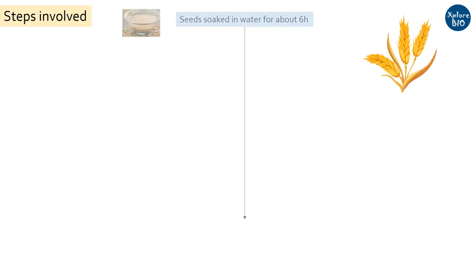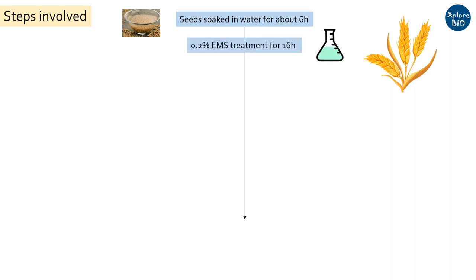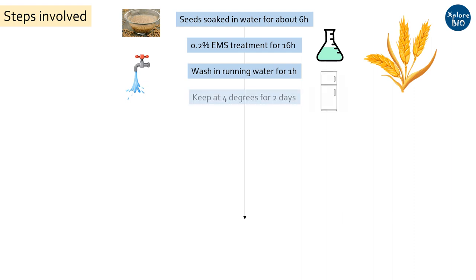First, several thousand seeds of wheat are soaked in distilled water for around 6 hours. Then the seeds are generally shaken in EMS solution of appropriate concentration for around 16 hours at 25 to 27 degrees. It should be noted that pre-soaking in water is essential before EMS treatment, as directly giving EMS treatment to dry seeds leads to severe seed lethality. Seeds are then washed thoroughly with running water for around 1 hour to remove traces of EMS, and kept at 4 degrees for 2 days before transferring to the field for uniform germination and flowering.